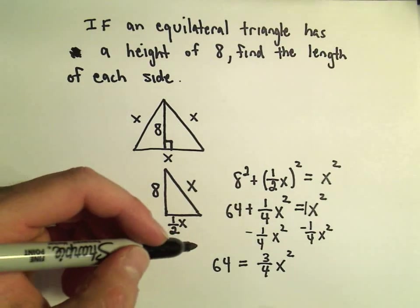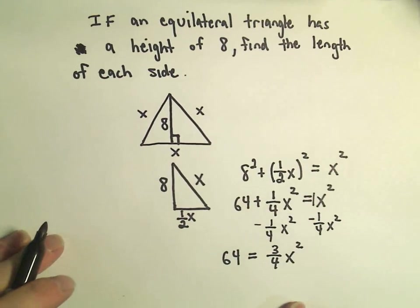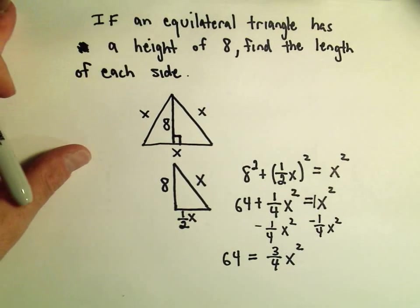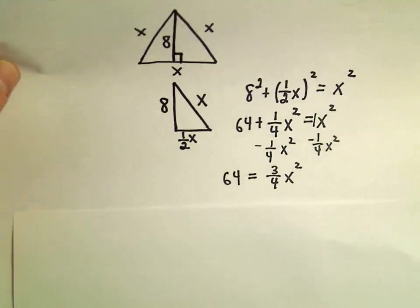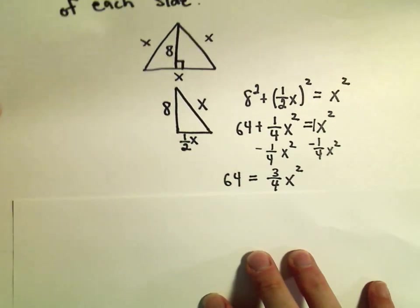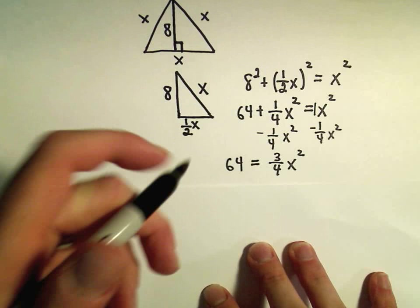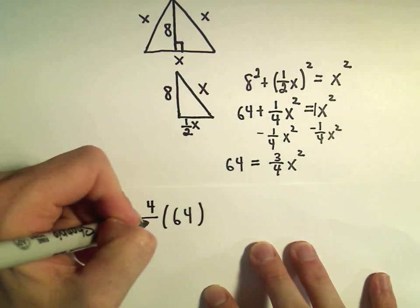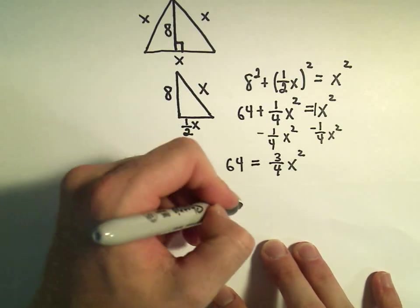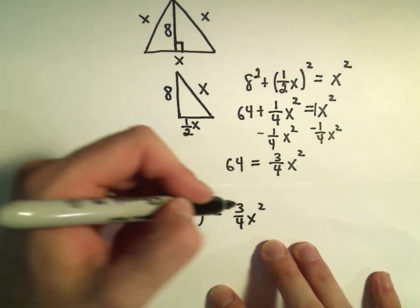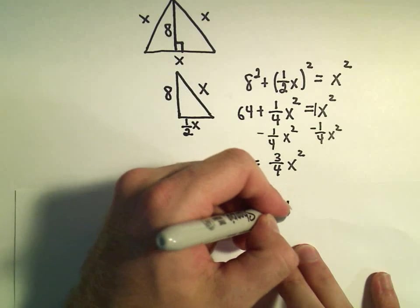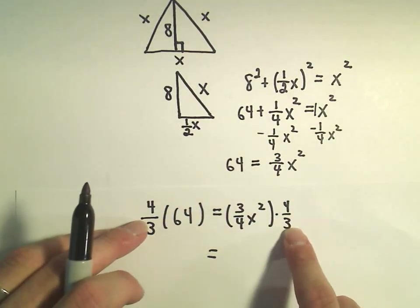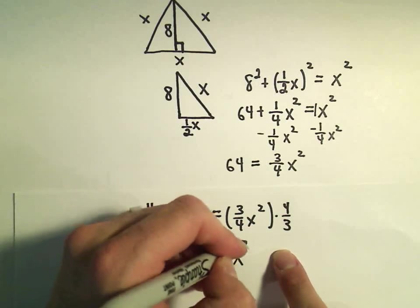And what I'm going to do now is, to get the x squared by itself, is I'm simply going to multiply both sides by 4 thirds. So if we multiply both sides by 4 thirds, we'll get 64 times 4 thirds equals, okay, we've got 3 fourths x squared. But we're multiplying that also by 4 thirds. And the point of doing that, 3 fourths times 4 thirds is just going to give us 1 x squared.